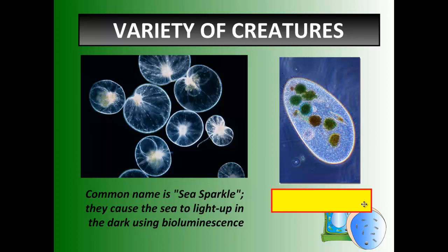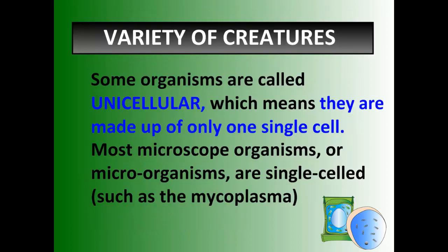And this funny blue-looking guy is a paramecium. We're going to take a look at parameciums a little closer in just a second. Some organisms are called unicellular — like the viruses and the sea sparkles I just showed you — which means they're made up of only one cell. Almost everything that we look at under the microscope are called microorganisms, and they're unicellular.